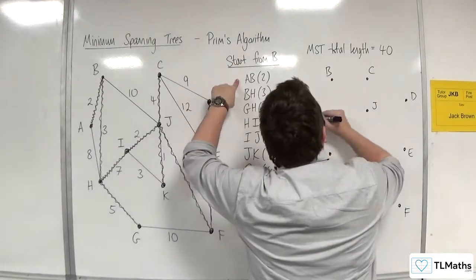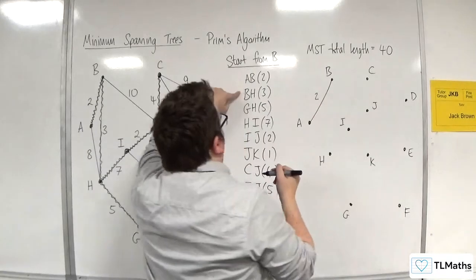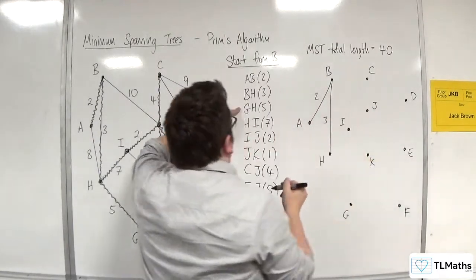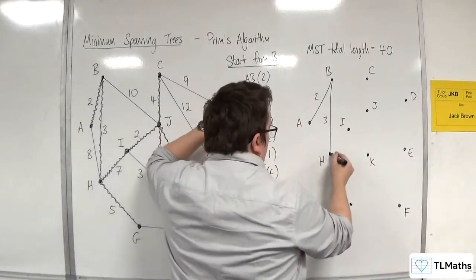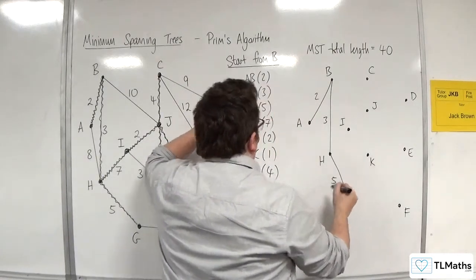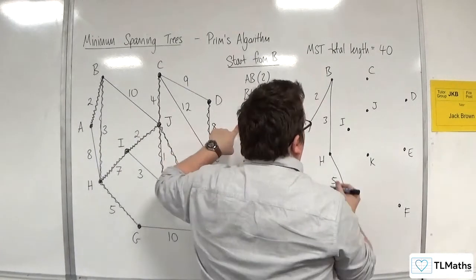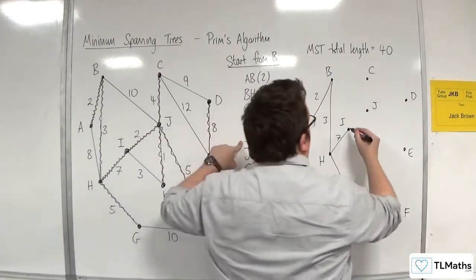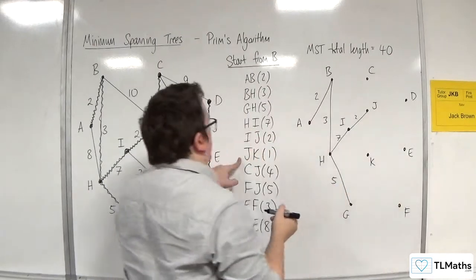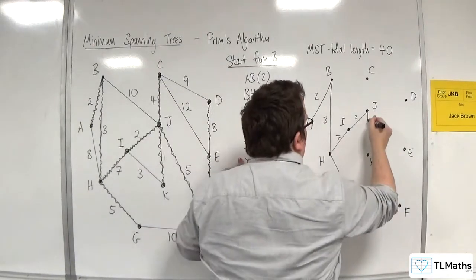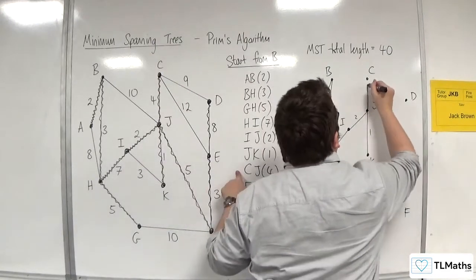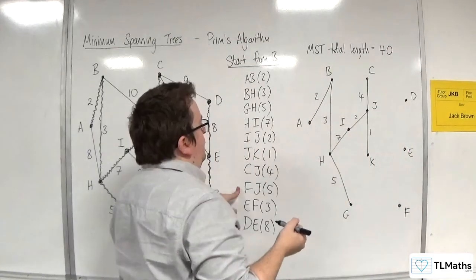We've got AB with 2. We've got BH 3. We've got GH 5. We've got HI 7. We've got IJ 2. We've got JK 1. We've got CJ 4. We've got FJ 5.